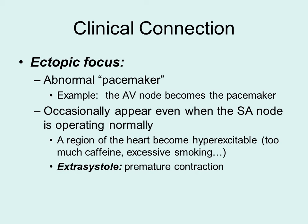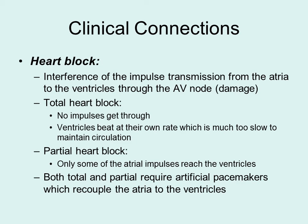An ectopic focus is an abnormal pacemaker situation where, for example, the AV node may become the pacemaker. This can happen even when the SA node is operating properly — part of the heart becomes too excitable, which can occur with too much caffeine, excessive smoking, etc. Heart block is when there is interference with the transmission of the impulse, typically due to damage to the AV node, preventing proper transmission from the atria to the ventricles.